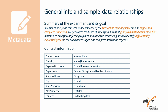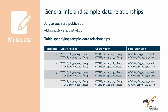We also should provide contact information of the person responsible for this data. Next, we provide a reference to the publication in which this dataset has been published, if any. Lastly, we provide a table that specifies which data file corresponds to which sample. In our example, we have three experimental conditions with four replicates each, and as the libraries have been paired-end sequenced, we have two data files per condition and per replicate.